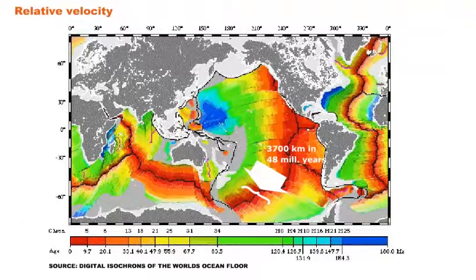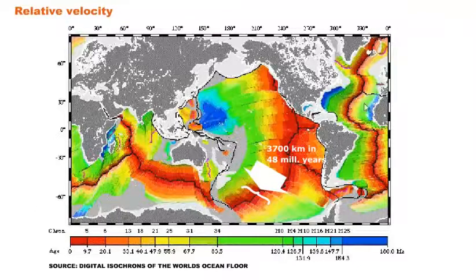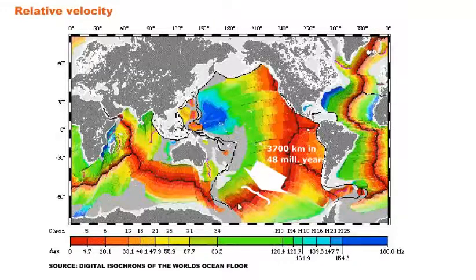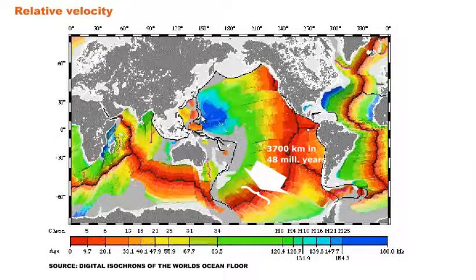Looking at a global map of rock ages and plate velocities, we can see where the red indicates the youngest ages, showing separation at the mid-ocean ridge. Rock gets older moving left or right from the ridge — a mirror image on each side. The eastern Pacific shows the East Pacific Rise, with material moving east and west, getting older heading out. The oldest ocean crust, over 25 million years old, is found where it dives into the subduction zone at the Marianas Trench — the deepest part of the ocean.